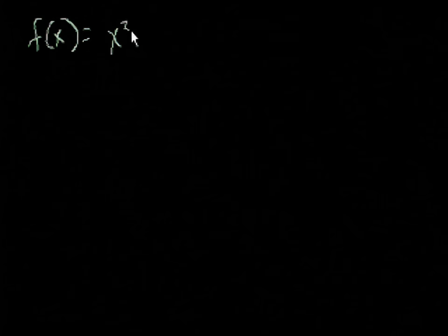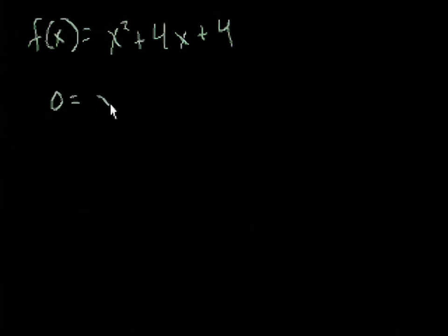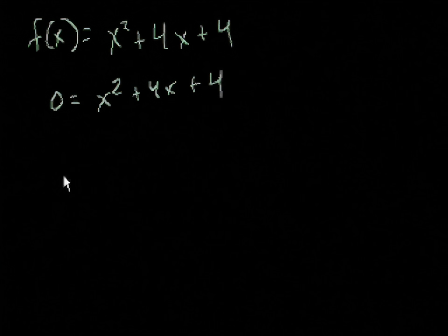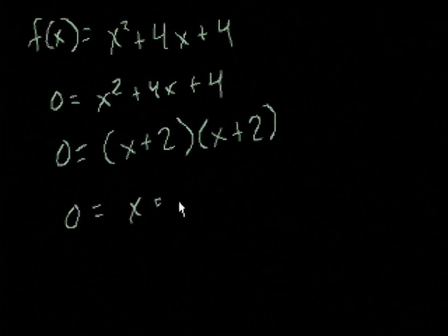Let's review that. If I had f of x equal to x squared plus 4x plus 4, and asked where are the zeros or the roots of f of x — that's the same as asking where does f of x intersect the x-axis, which is when f of x equals 0. So we set 0 equal to x squared plus 4x plus 4, factor that as x plus 2 times x plus 2, and we get x equals negative 2.